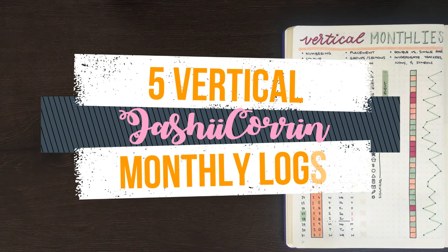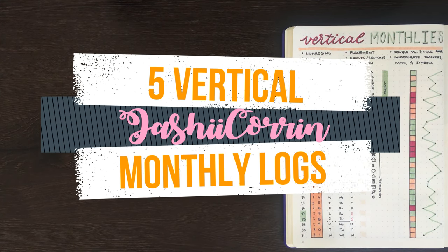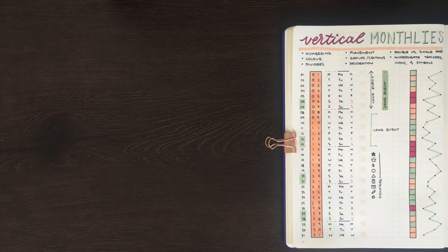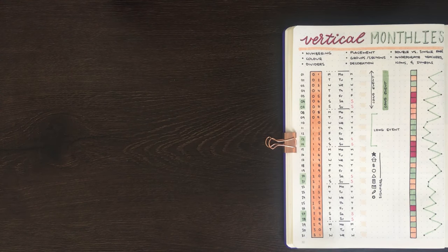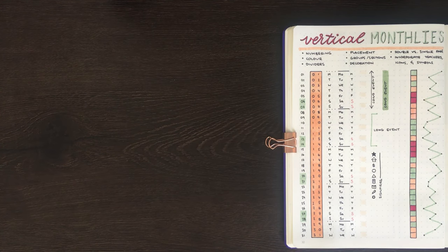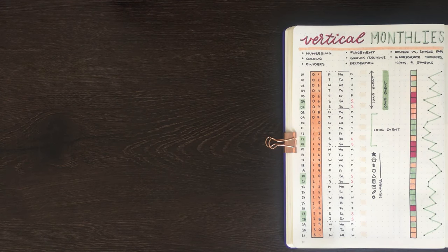Hello again, it's Jess or Joshi Karin, and in today's video I'm going to be showing you some different ways you can use vertical monthly layouts. Vertical monthly logs are pretty much a staple in the bullet journaling system — they're the one you can find in Ryder Carroll's original bullet journal video, which goes through what a bullet journal is and how you can use it. Beyond just writing a list of numbers down the side of a page that correspond to the days of the month, there are heaps of additional things you can do to a vertical monthly log to really make it your own.